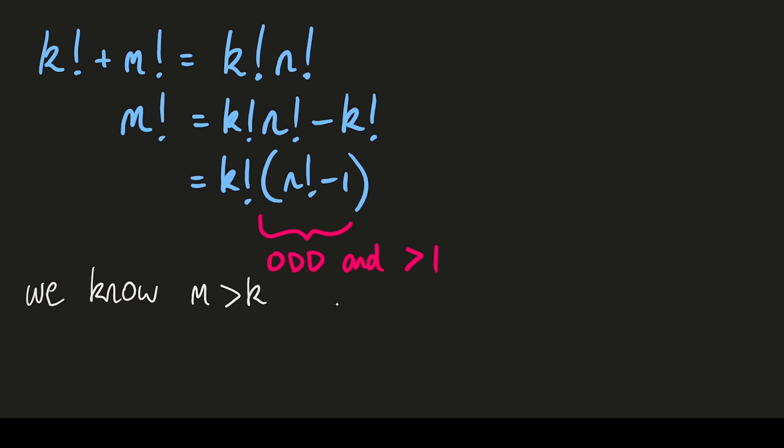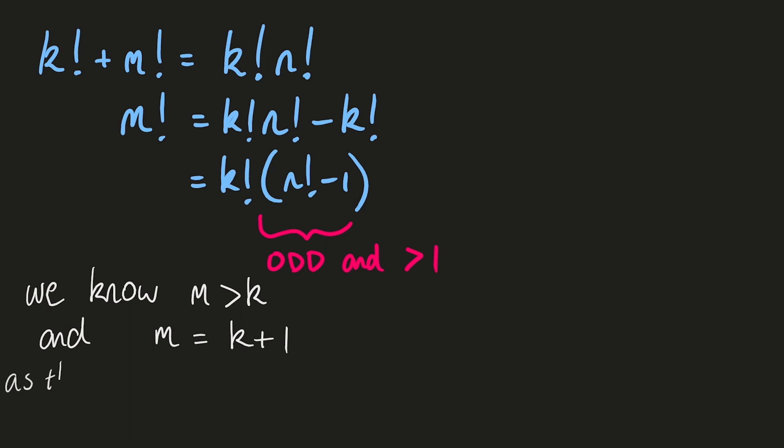The fact that we're multiplying by an odd number actually means that m must be exactly equal to k plus 1 as there can't be any even numbers between k and m. n factorial minus 1 does not contain any even factors. Let's look at an example to demonstrate that idea.